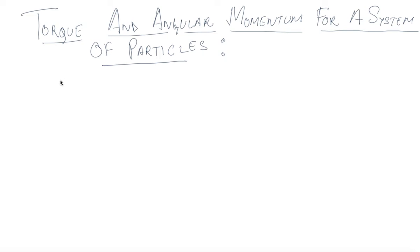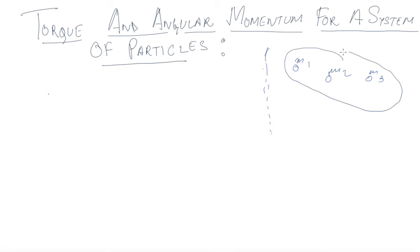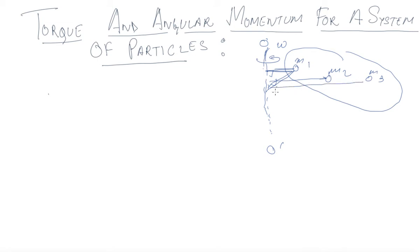Now we know what torque is and what angular momentum is. What about finding the angular momentum for a system of particles? Say this is the system with particles m1, m2, m3. This system is rotating with angular velocity omega about a fixed axis, say O-O dash. The perpendicular distance — and please keep in mind — the perpendicular distance means this specific distance for each particle, not something else.